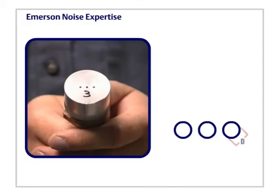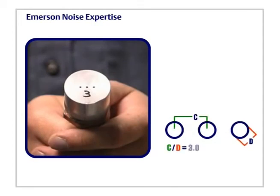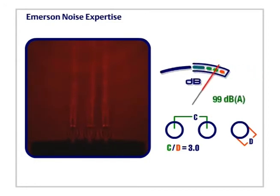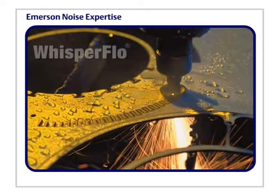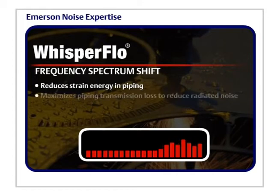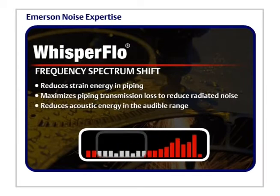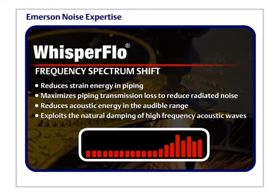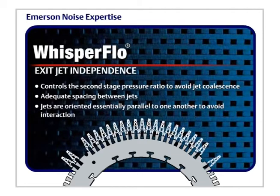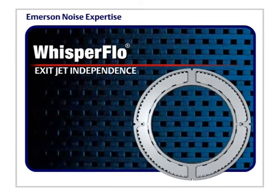This example uses the same three holes, each one-eighth inch in diameter, but the spacing ratio is three — in other words, the distance between the holes has doubled. This time, the jets stay independent for the duration of the test. Emerson's noise reduction expertise helps produce products like WhisperFlow, which incorporates Fisher's noise reduction technology. WhisperFlow trim features frequency spectrum shift, reduces strain energy in piping, maximizes piping transmission loss to reduce radiated noise, reduces acoustic energy in the audible range, exploits the natural damping of high-frequency acoustic waves, exit jet independence, controls the second-stage pressure ratio to avoid jet coalescence, and maintains adequate spacing between jets. Jets are oriented essentially parallel to one another to avoid interaction.